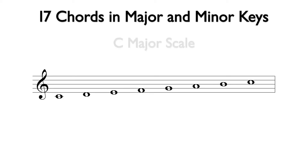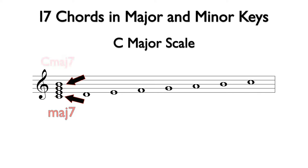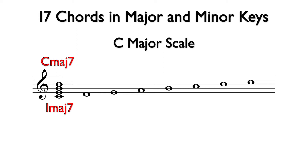Here is the C major scale. The I7 chord is based off of C. Using the notes from the scale to build the 7th chord, we can add E, G, and B above the C note. The bottom three notes spell a C major triad, and the interval from C to B is a major 7. This is C major 7, and we will use the uppercase I Roman numeral with an MAJ and a 7 for the analysis.